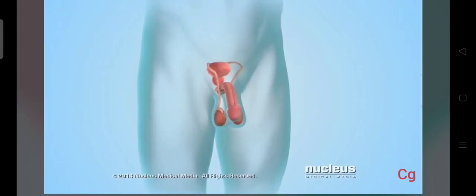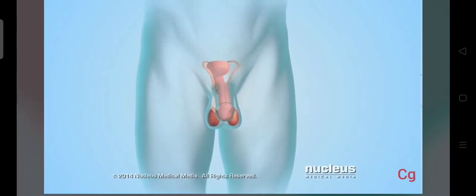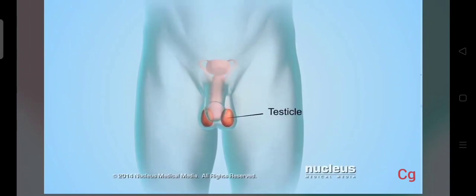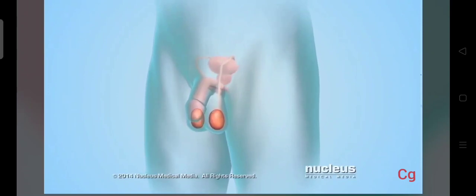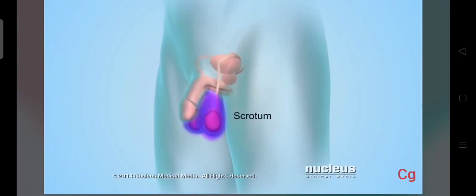A man's reproductive system includes two glands, called testicles or testes. They're located inside a pouch of skin called the scrotum.